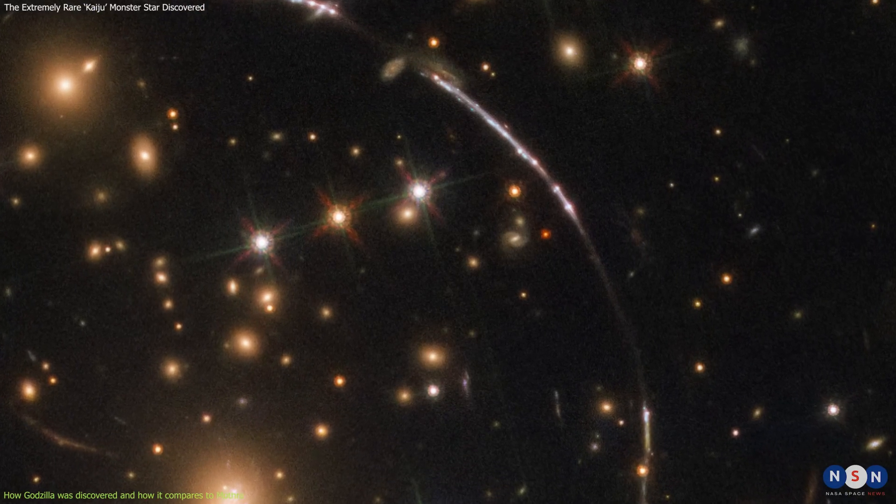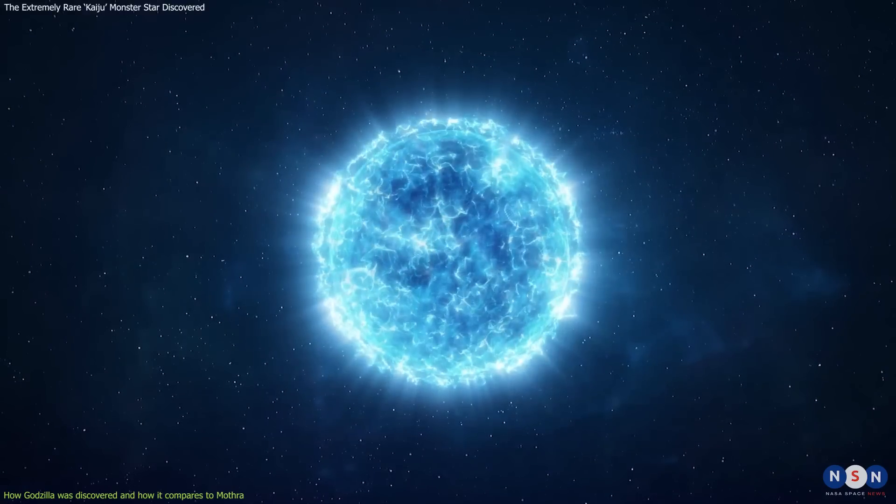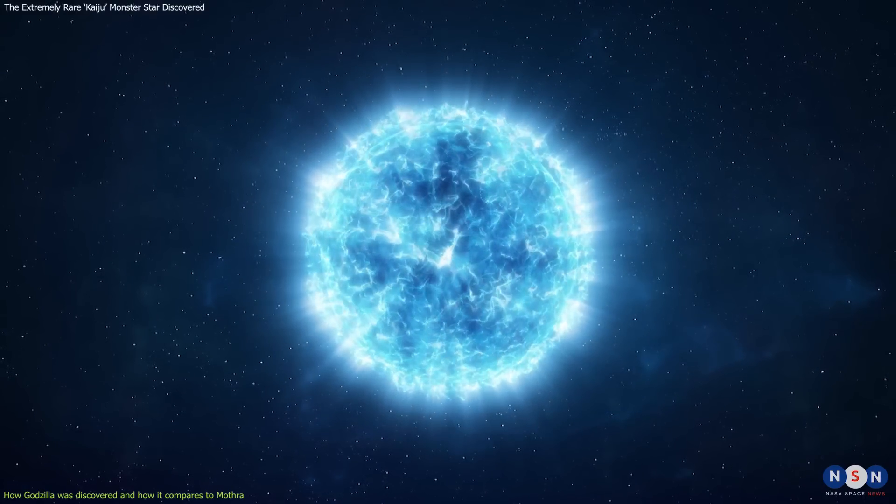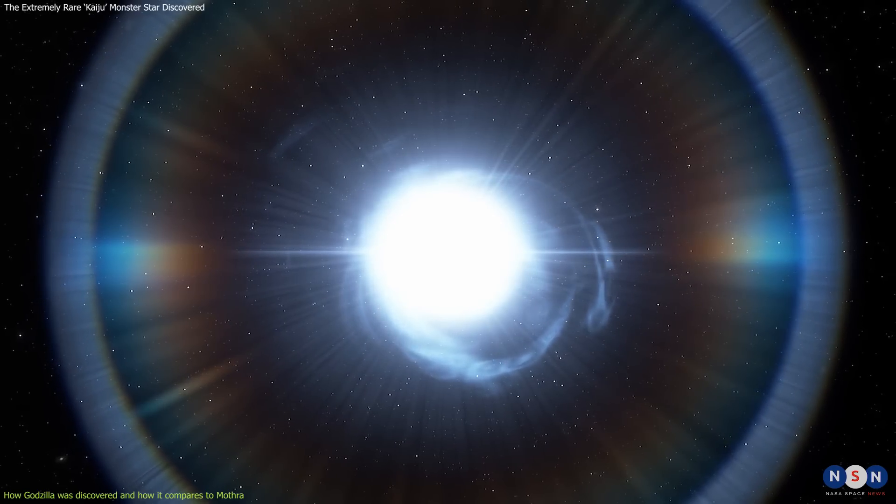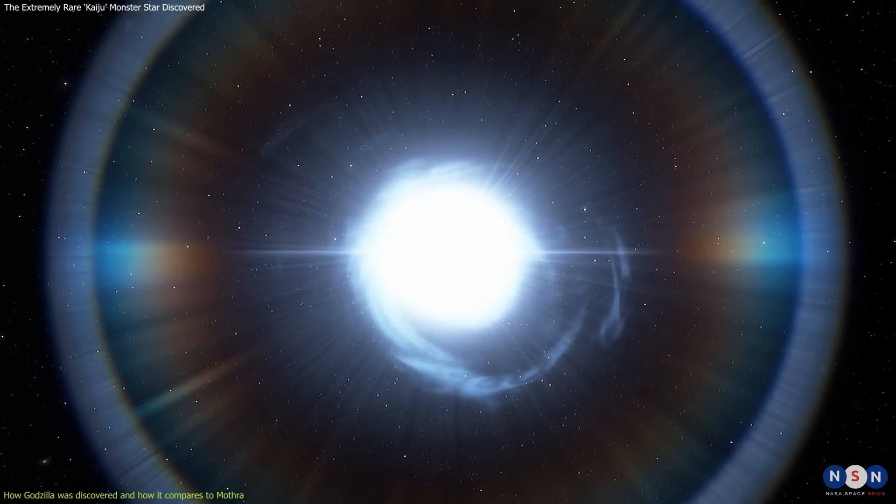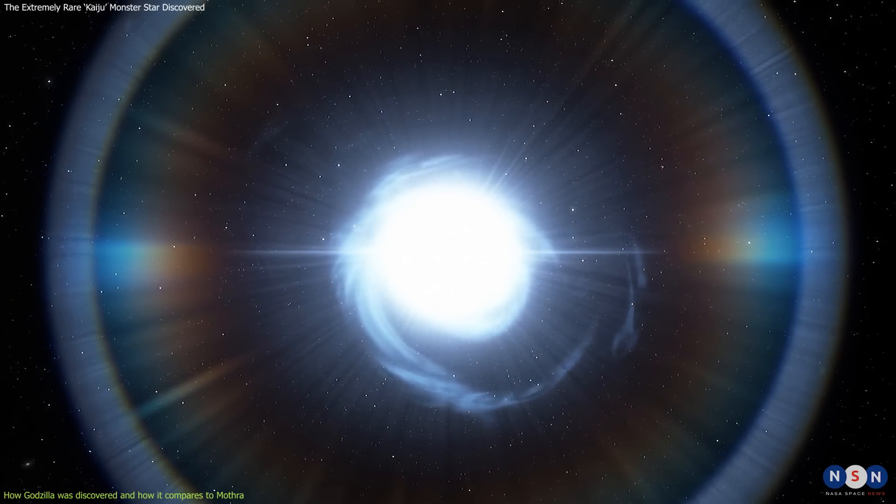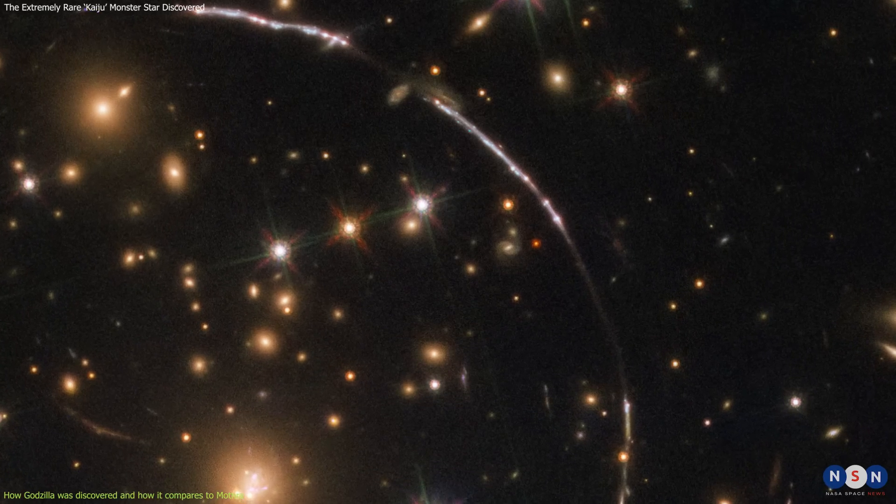It has a radius of about 300 times that of our sun, making it one of the largest stars ever observed. It belongs to another rare type of stars called blue supergiants, which are very massive and luminous stars that have very high surface temperatures and very strong winds.